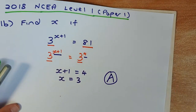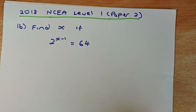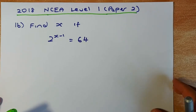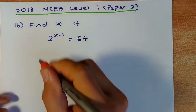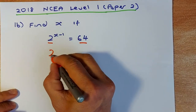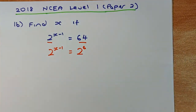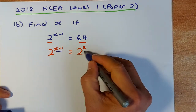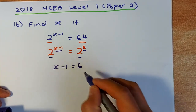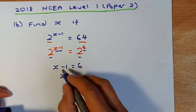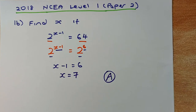Here is another example, very similar to the first. This is again 2018 NCEA Level 1, paper 2. You have 2 to the power of 2x minus 1, and you need to make the same base. 64 is 2 to the power of 6. So now you solve the powers: 2x minus 1 equals 6. Solving algebraically, x equals 6 plus 1, which is 7. That is an easy Achieve in NCEA Level 1.